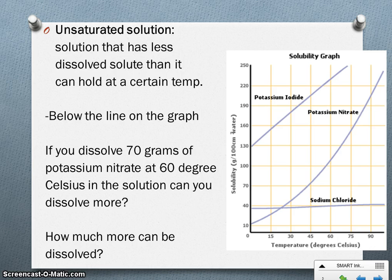If you're reading a solubility graph, this would represent any area below the line. So if we're looking at this example here, it says if you dissolve 70 grams of potassium nitrate at 60 degrees in a solution, can you dissolve more? First of all, potassium nitrate—that's this line here.